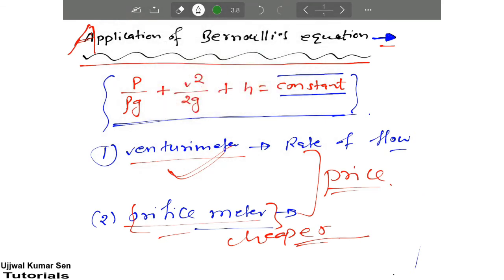If you want to know the accuracy of measurement—basically why I'm telling you this is because the application of orifice meter is also the same, that is measuring rate of flow. Both devices we're using for the same purpose. One difference is price—orifice meter is cheaper. Another one is accuracy.